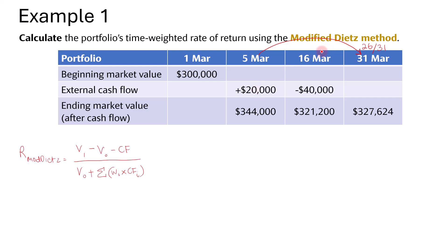For the second cash flow, from 16th March to 31st March — the cash outflow — the cash will be out of the portfolio for 15 days. So the weight will be 15 over 31. With that, we are done and can substitute the numbers in.